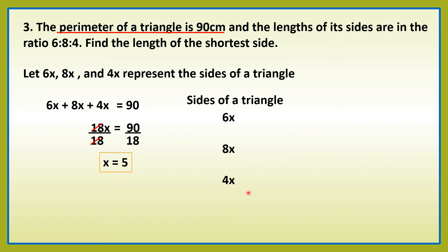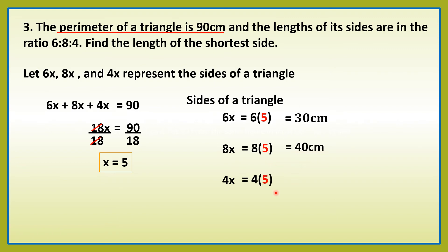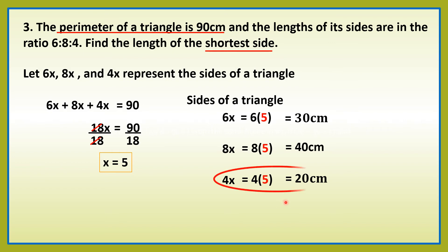So, let's have here 6x, 8x, and 4x. Substitution — we will have now 6 times 5, kasi x ay 5, that is equal to 30 centimeters. 8 times 5 equals 40 centimeters. 4 times 5, that is equal to 20 centimeters. So, wag kakalimutan yung units. Then ang tanong dito sa problem is shortest side — so ang shortest side natin ay 20 centimeters.